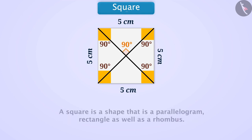A square is a figure which is a parallelogram, a rectangle, as well as a rhombus. Can you find out the reason why this is so? Try this yourself.